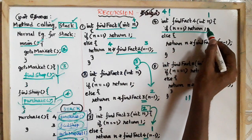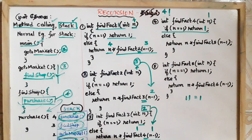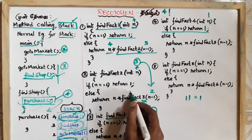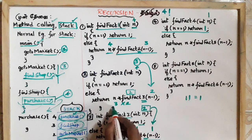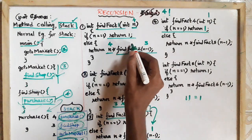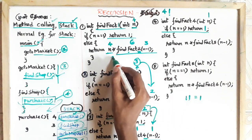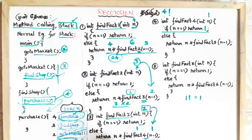findFact of 1 returns 1, so that method returns. Now we write the result: 2 into 1 is 2, written in the value of findFact 2. That is used in findFact 3: 3 into 2 is 6. Then findFact 4: 4 into 6 is 24. The result is 24.